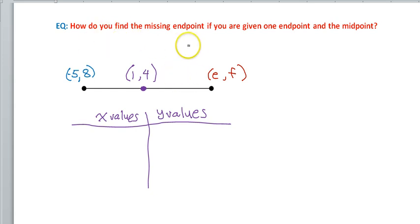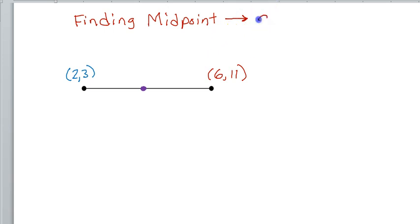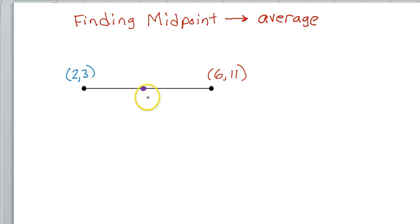Before we do this problem, here's a quick example of how we used to find the midpoint when we knew both endpoints. One point is 2 comma 3, the other endpoint is 6 comma 11. Finding the midpoint is all about finding the average. If we find the average of the x values, that gives us the x value of the midpoint. If we find the average of the y values, we get the y value of the midpoint. You add them up and divide by 2.